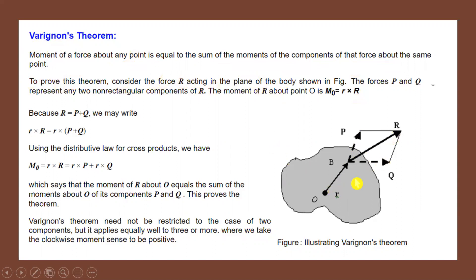The moment of a force about any point is equal to the sum of the moments of the components of that force about the same point — this is called Varignon's Theorem. To prove this theorem, consider a force R acting in the plane of the body as shown in the figure. The moment of force R about point O is the cross product: small r × capital R.